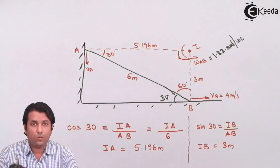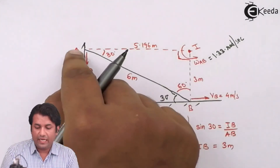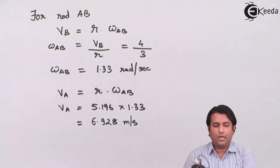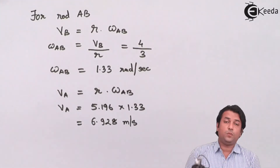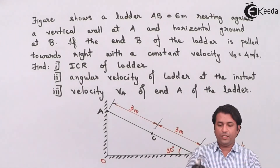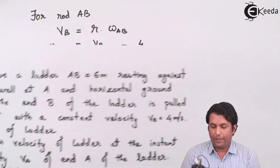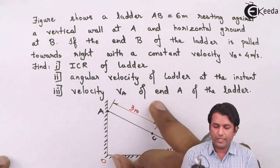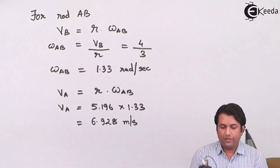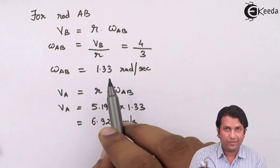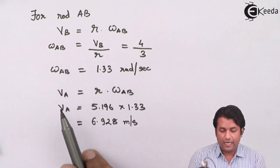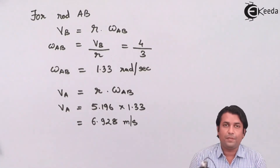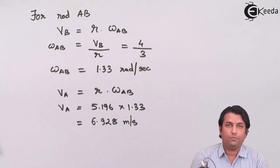Now using va = IA·omega_AB: va = 5.196 × 1.33 = 6.928 m/s. So the ICR is located at point I, the angular velocity of the ladder is 1.33 rad/s, and the velocity at point A is 6.928 m/s. I hope you have understood this example of kinematics of rigid bodies for general plane motion. Thank you.